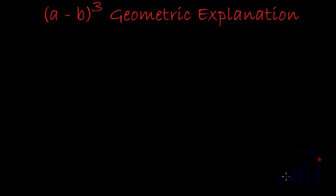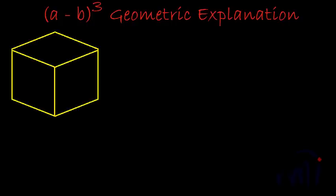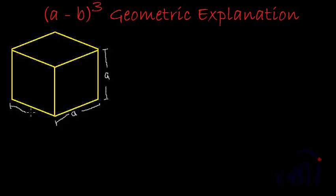First I am going to take a cube whose each edge is equal to A. So here we have a cube where each side is equal to A — this dimension is A, its height is also A, and this dimension is also A.